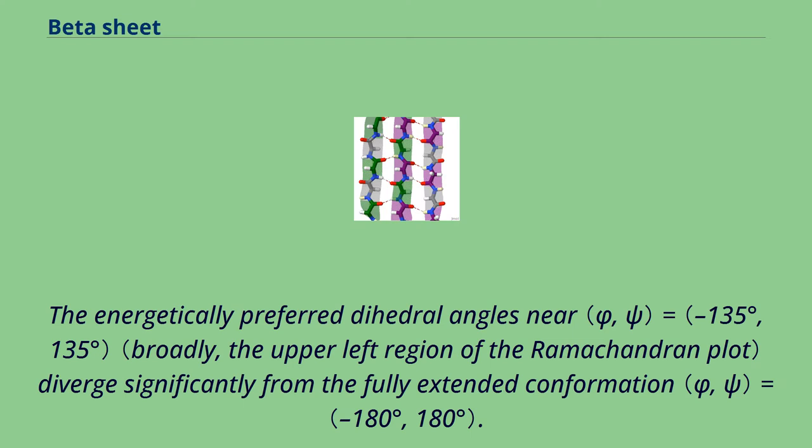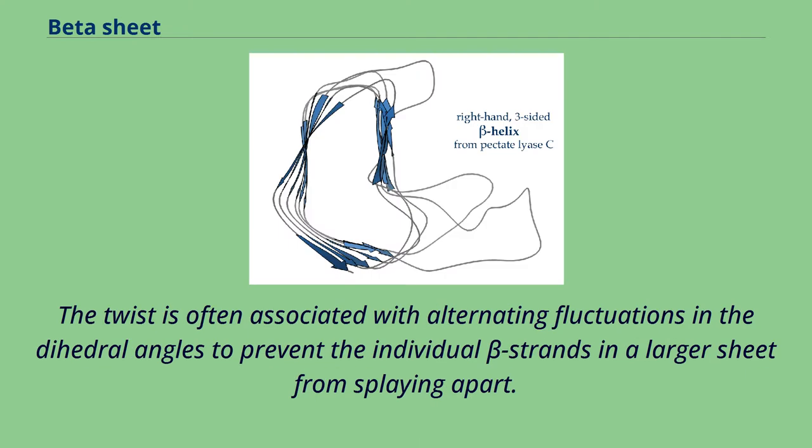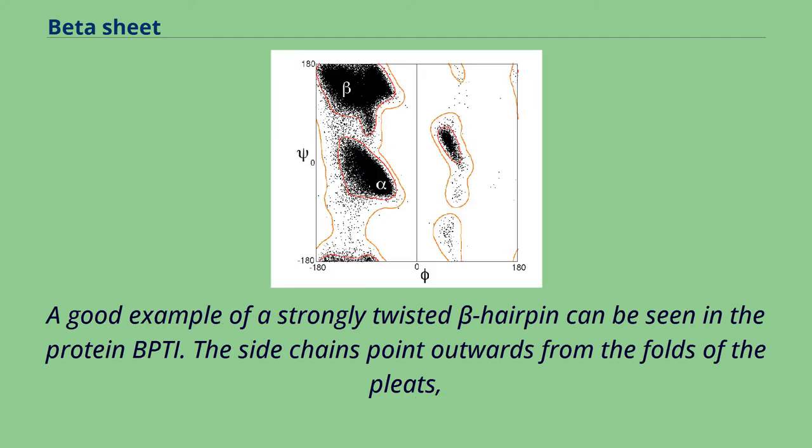The energetically preferred dihedral angles diverge significantly from the fully extended conformation. The twist is often associated with alternating fluctuations in the dihedral angles to prevent the individual beta strands in a larger sheet from splaying apart. A good example of a strongly twisted beta hairpin can be seen in the protein BPTI.